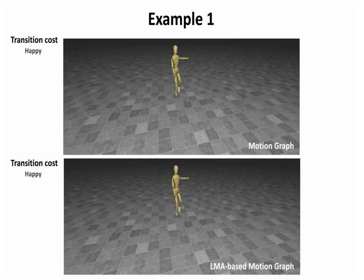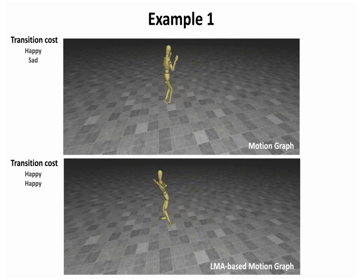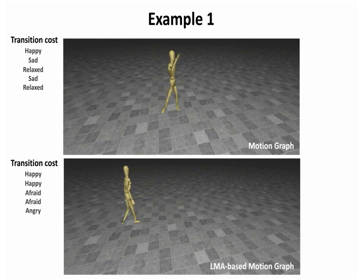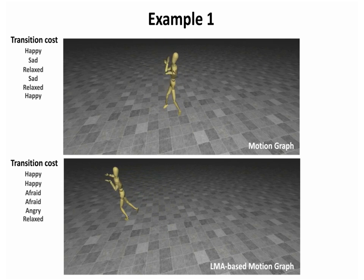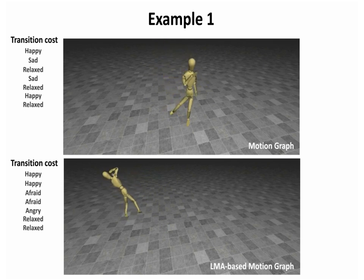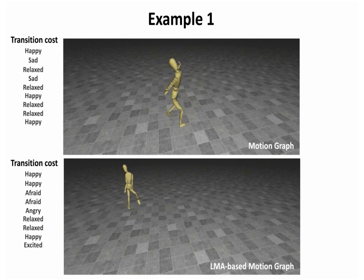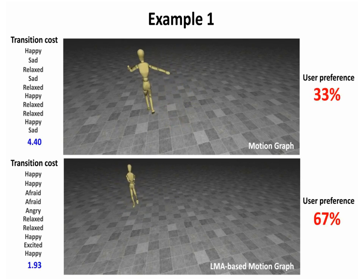To verify the perceived quality of the synthesized motions, we conducted a user survey. We first generated pairs of animations, one for each method, in which the two characters start from the same random frame and transition automatically to other motions by traversing the respective graphs. The node with the highest similarity is chosen each time. We then asked 77 users to select which animation appears to be more continuous and plausible. Overall, 67% preferred the animations synthesized using our method.